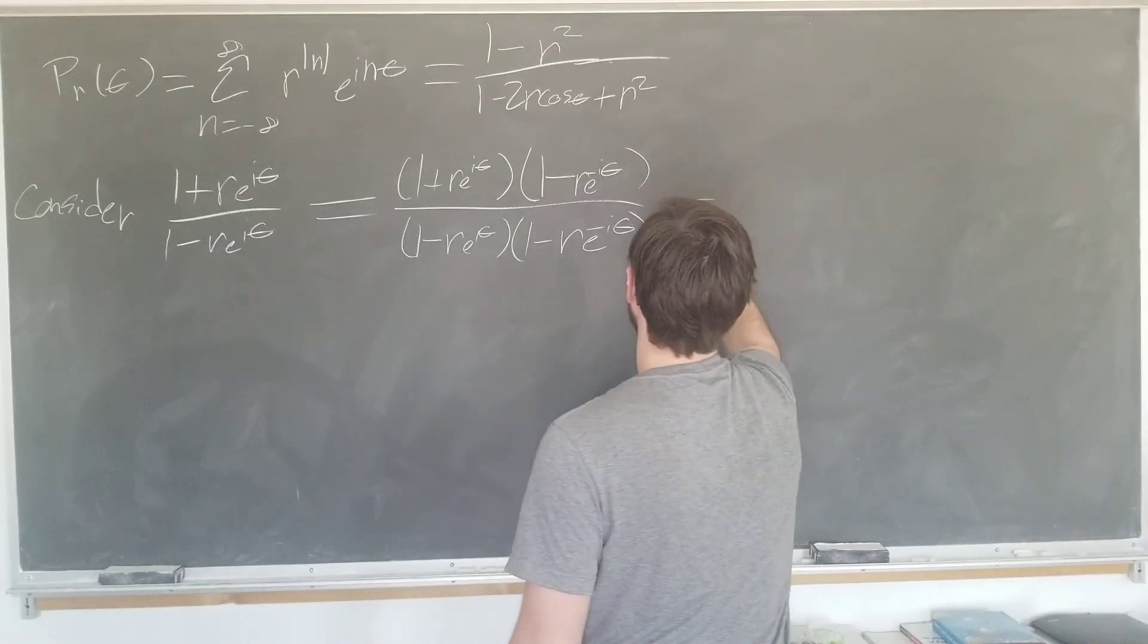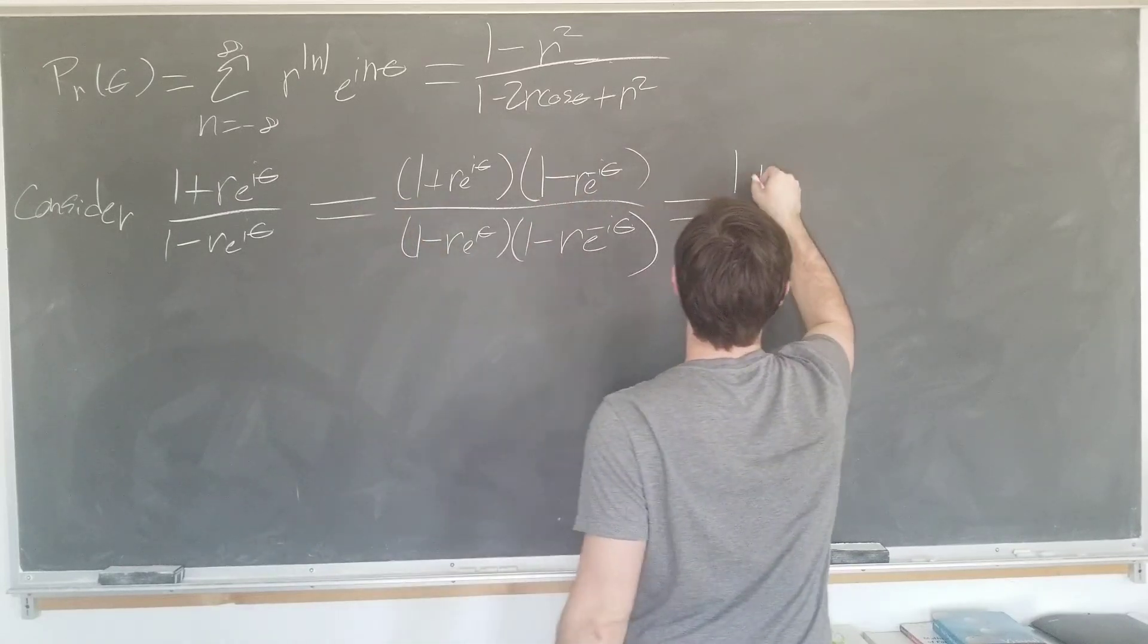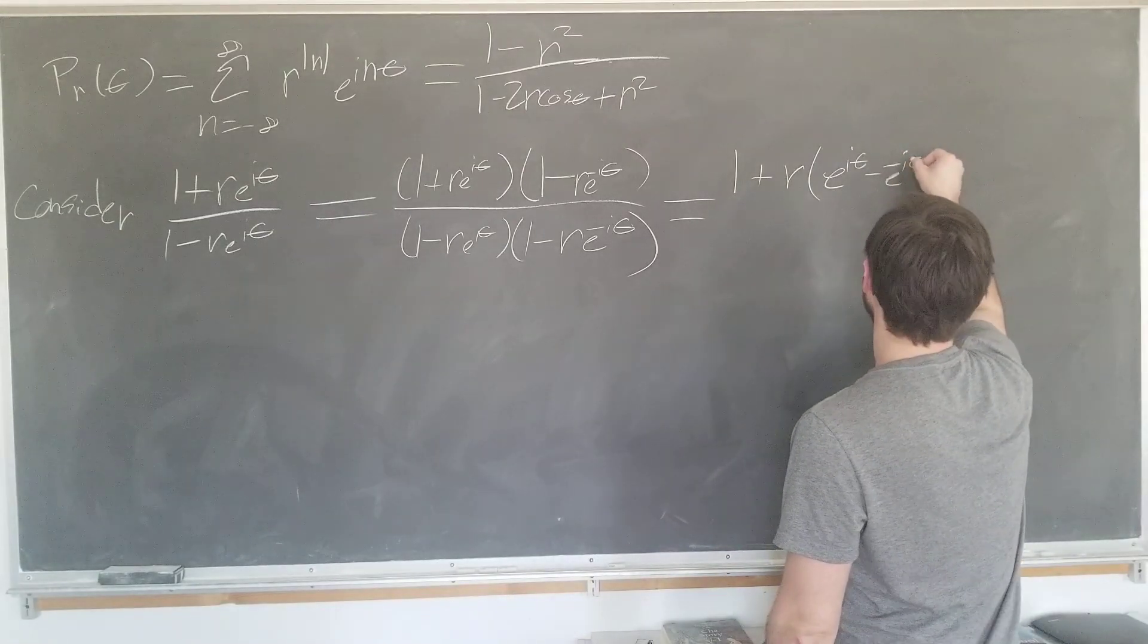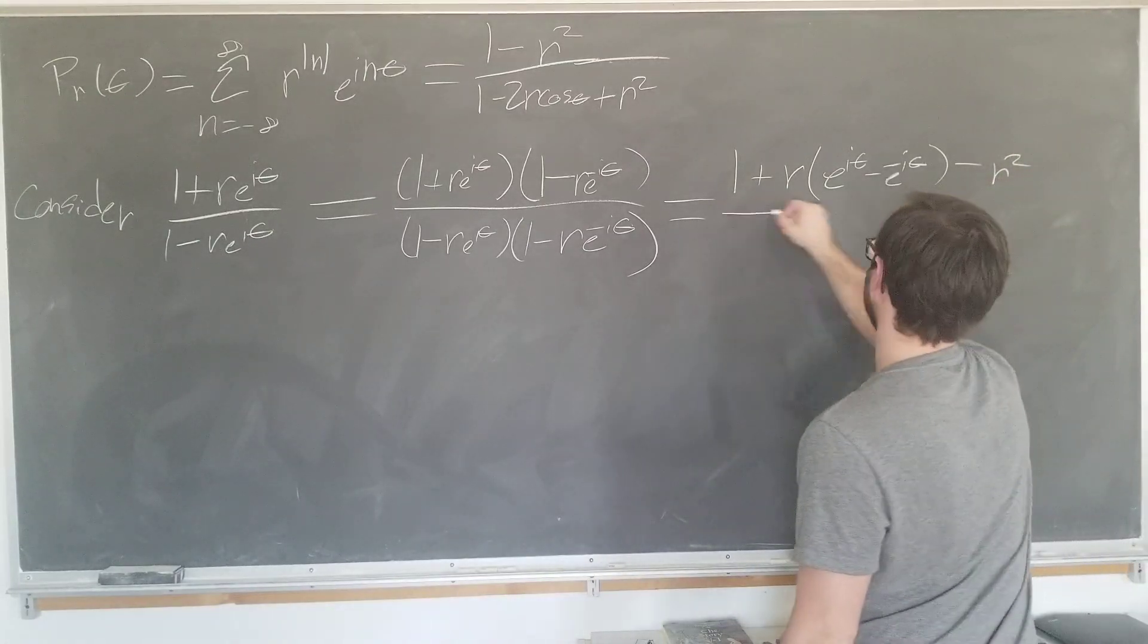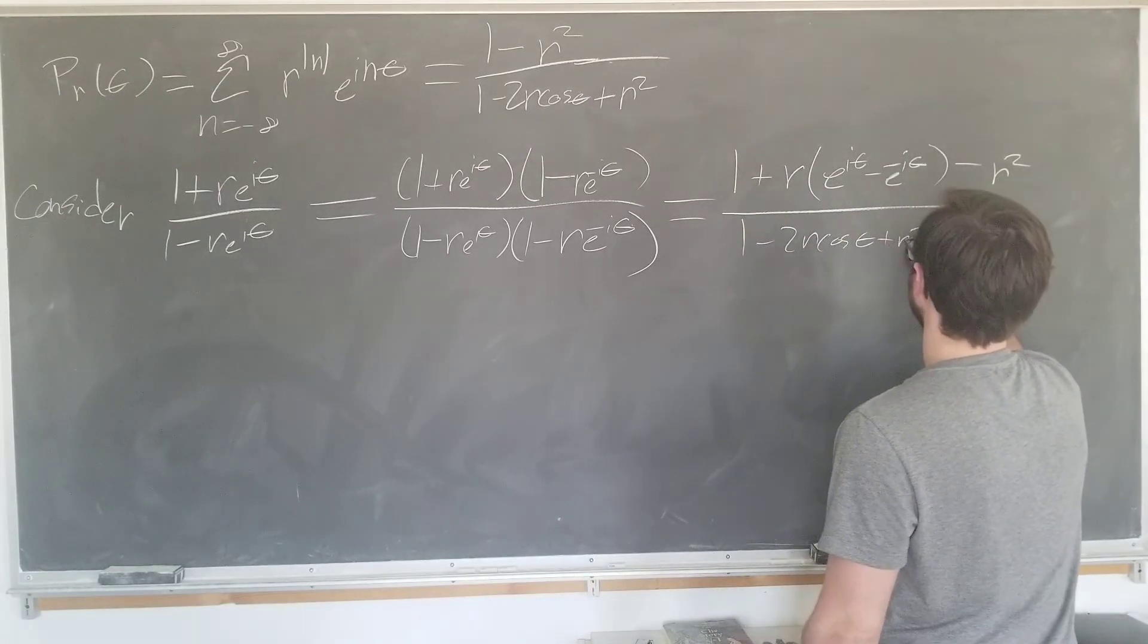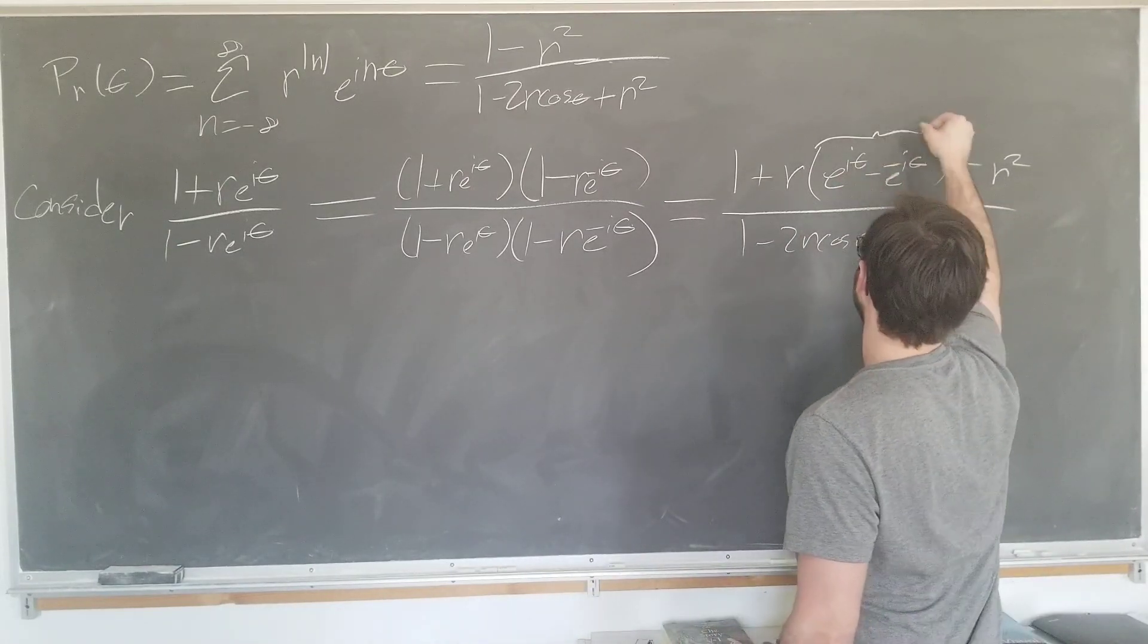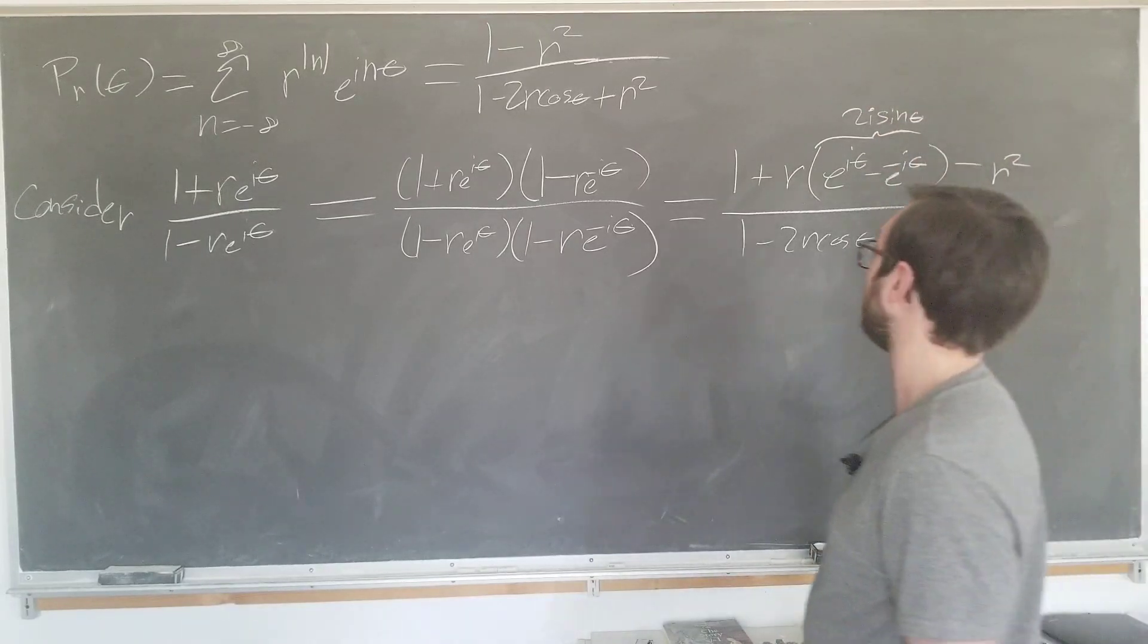The numerator, we see, multiply it out, 1 this time. We're going to have r times an opposite sine cross term. We're going to have e to the i theta minus e to the minus i theta, which should look familiar to you. We're going to get a minus r squared again over the denominator.